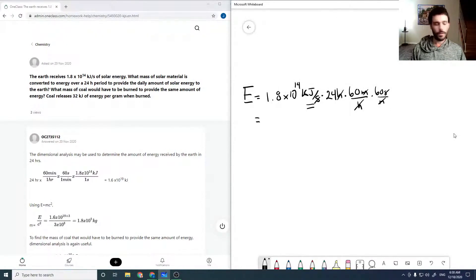So then if we run this through on our calculator, we would get a value of about 15.552 times 10 to the 18 kilojoules. And then we'd round it to only two significant figures at the end, but for now I'm just holding on to everything.